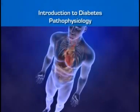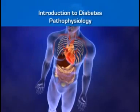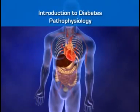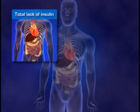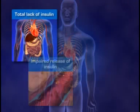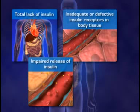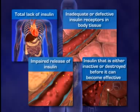Diabetes mellitus is a disorder characterized by an imbalance between insulin production, insulin need, and the body's ability to use the available insulin. This imbalance can result from a total lack of insulin, from impaired release of insulin by the beta cells of the pancreas, from inadequate or defective insulin receptors in body tissues, or from the production of insulin that is either ineffective or destroyed before it can become effective.